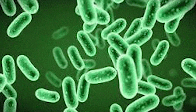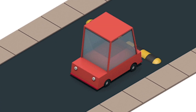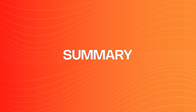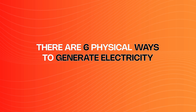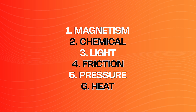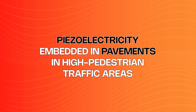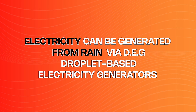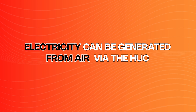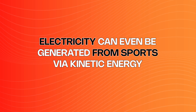Imagine all the unique ways we can generate electricity — through marine bacteria, jellyfish, solar wind and noise, speed bumps and belts. The possibilities are endless. To summarize: there are six physical ways to generate electricity — magnetism, chemical, light, friction, pressure, and heat. Piezoelectricity has been embedded in pavement in high pedestrian traffic areas. Electricity can be generated from rain via DEG, or droplet-based electricity generators. Electricity can be generated from air via the HUC enzyme. Electricity can even be generated from sports via kinetic energy.